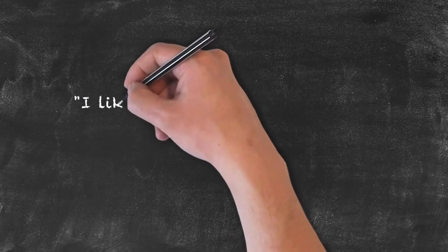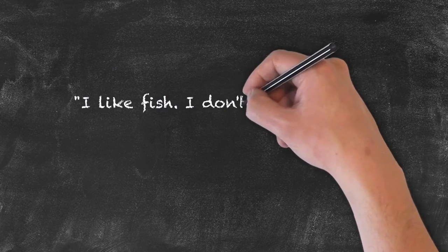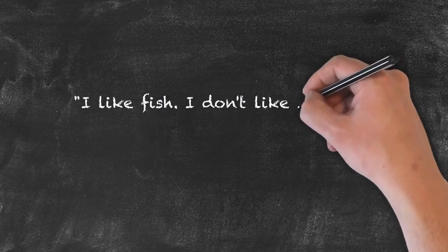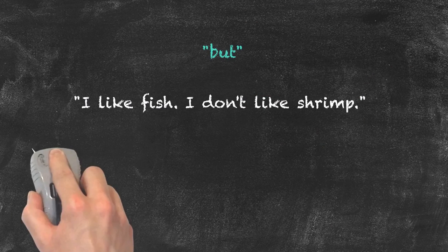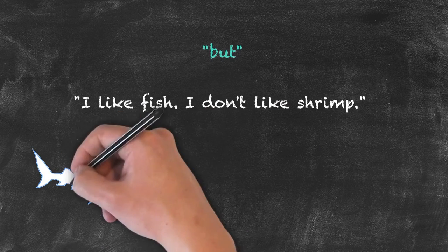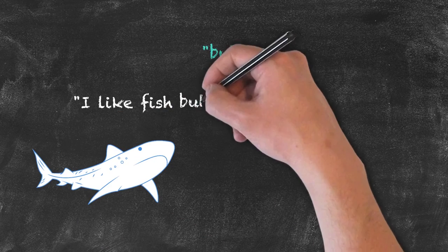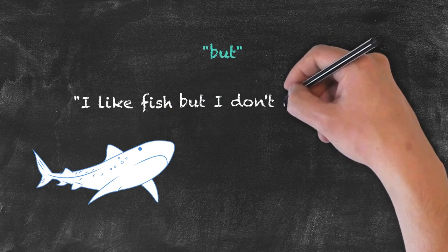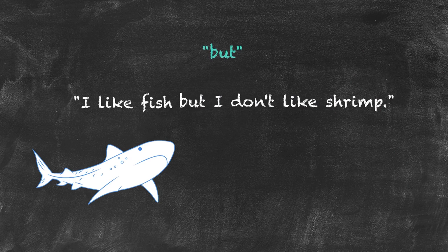Take these two sentences — independent clauses: 'I like fish' and 'I don't like shrimp.' We would use 'but' to join them and make one sentence: 'I like fish, but I don't like shrimp.'